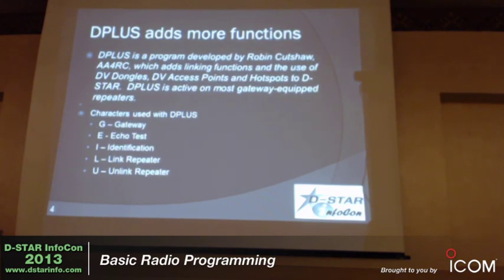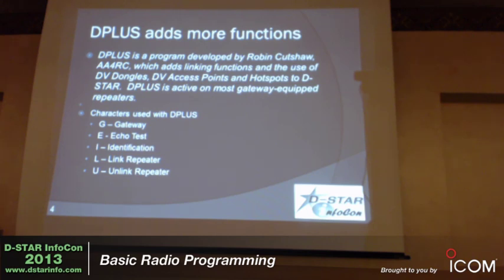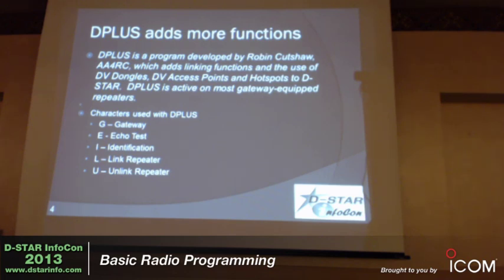We'll go through some examples. As part of the plain gateway, ICOM gateway software known as G2, you have some basic functions. It provides the basic functionality of the repeater and the basic authentication to the trust server and connection to the internet. But there's not a whole lot beyond that. You can do call sign routing, and they implemented multicasting in G2, which no one really uses. It was an early attempt at repeater linking.